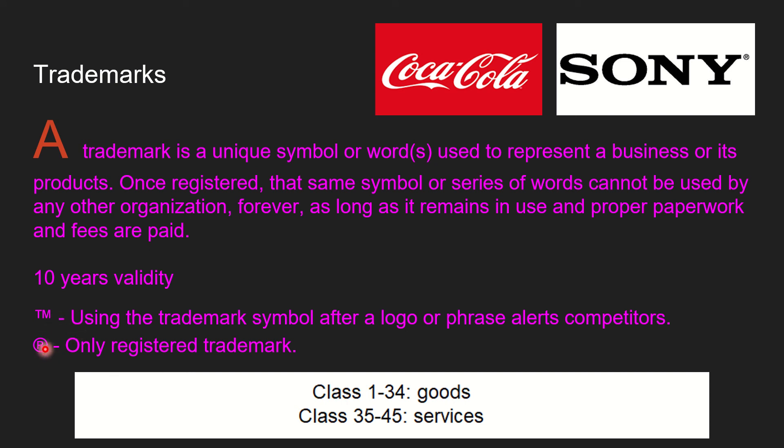You will normally see TM, or ® — R over a circle. TM is a symbol that alerts competitors saying this is my trademark, while ® means it is a registered trademark. There are 45 classes in total: classes 1 to 34 cover goods and 35 to 45 cover services. Commonly known trademarks include Coca-Cola, Sony, Amazon, and Flipkart — all registered and cannot be used by others.